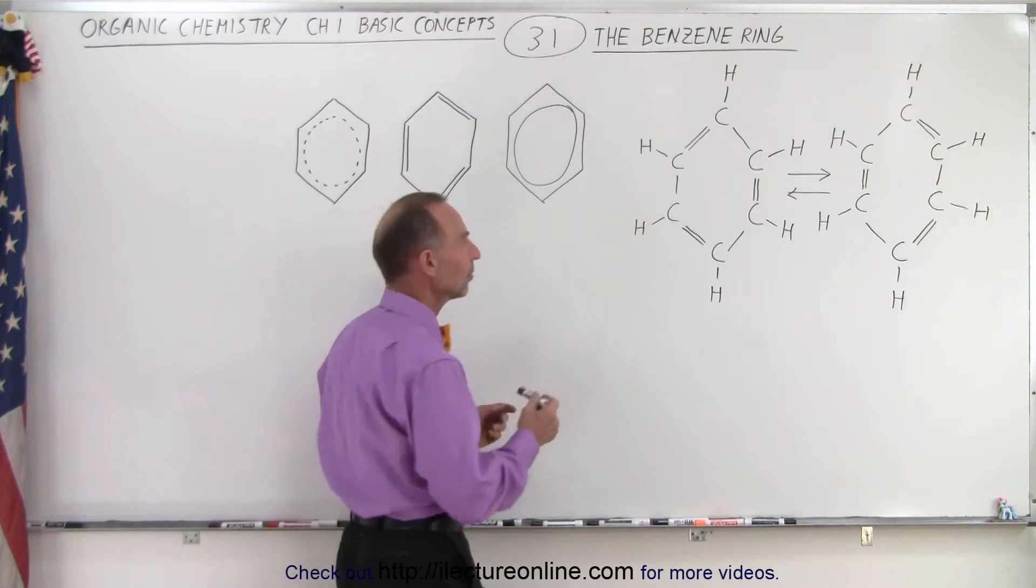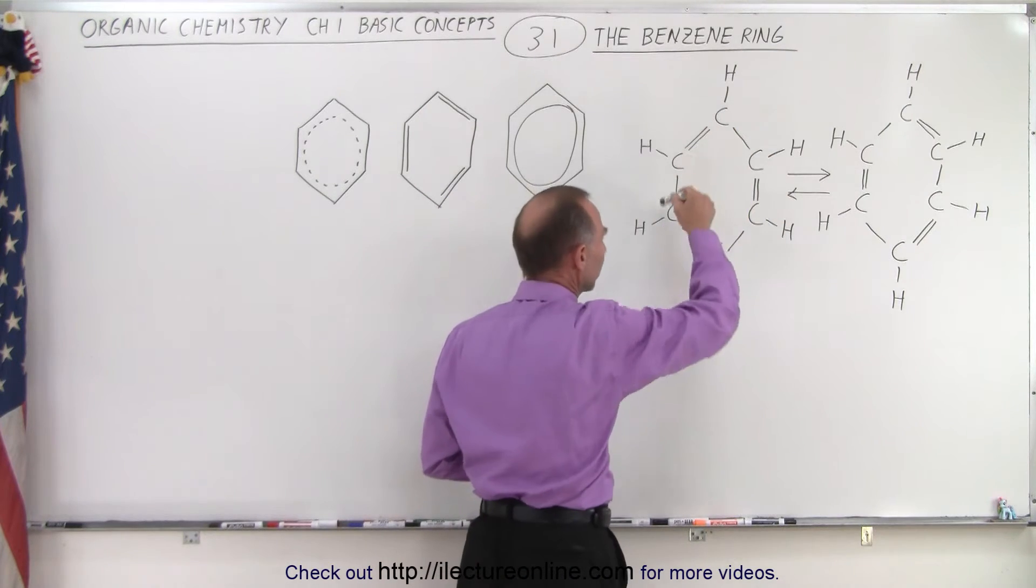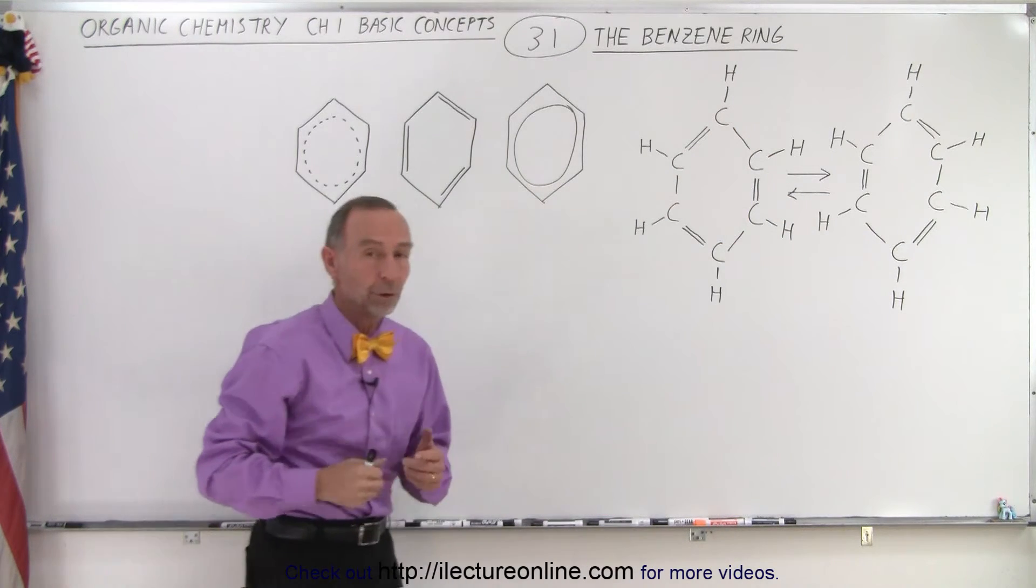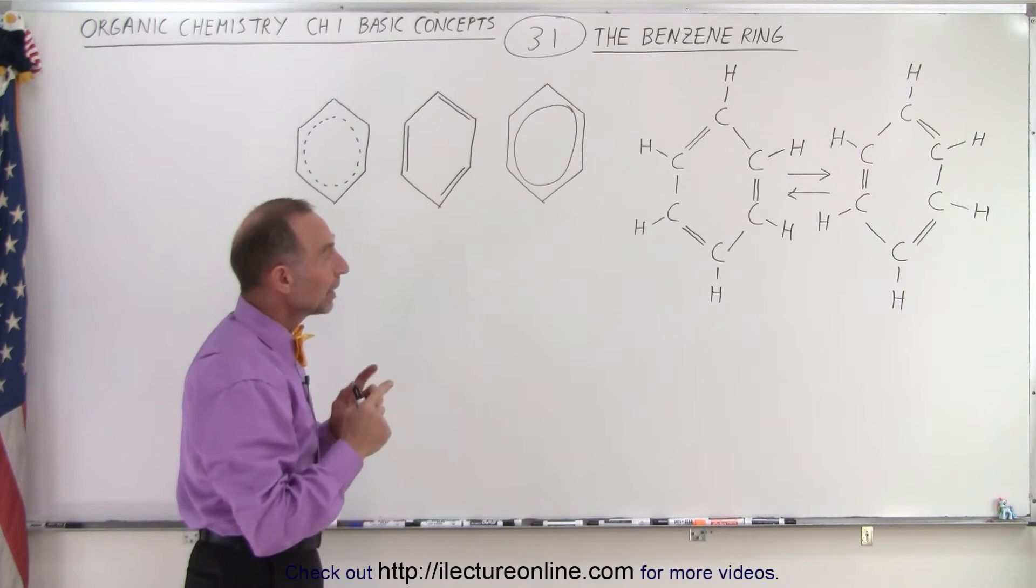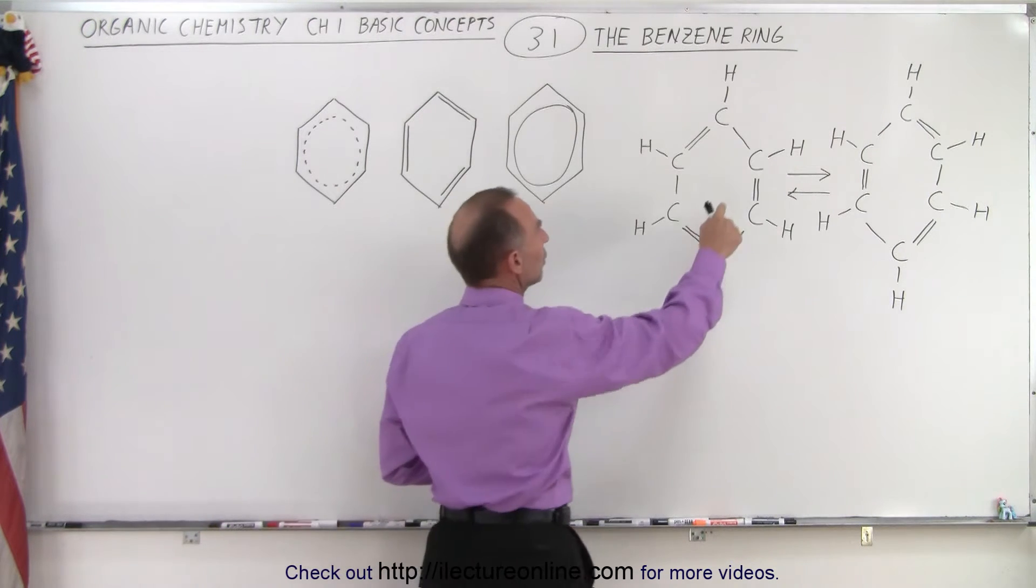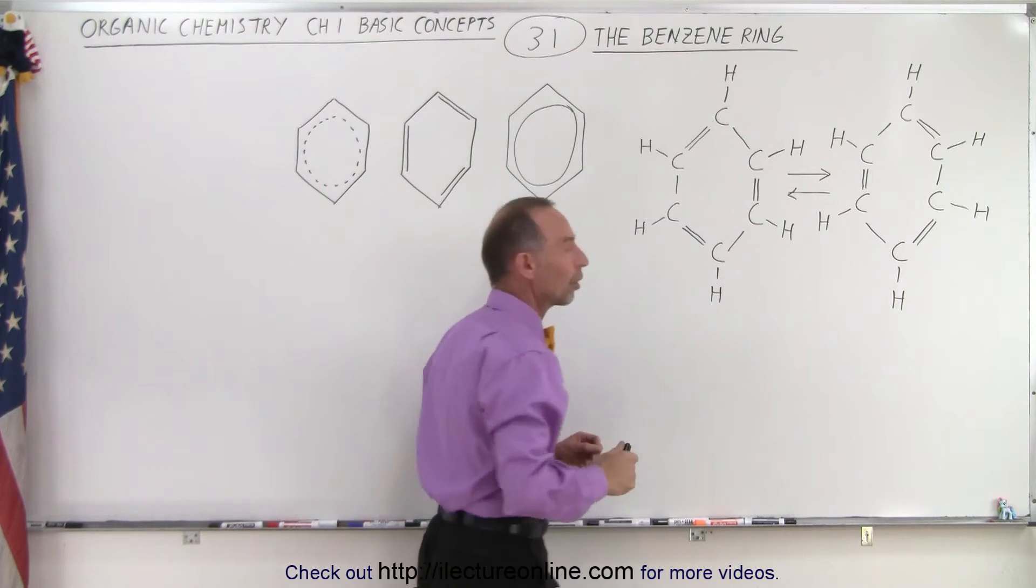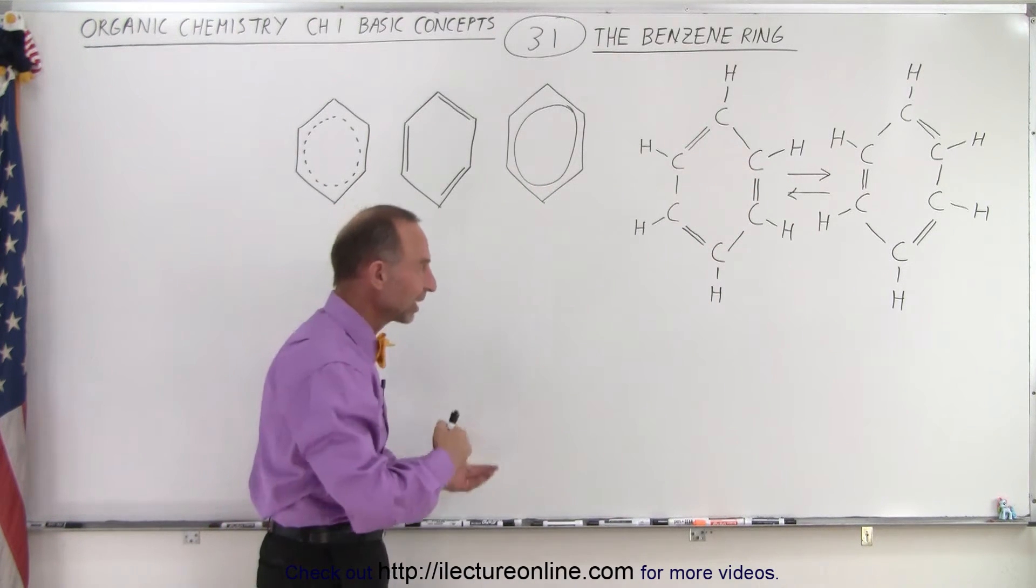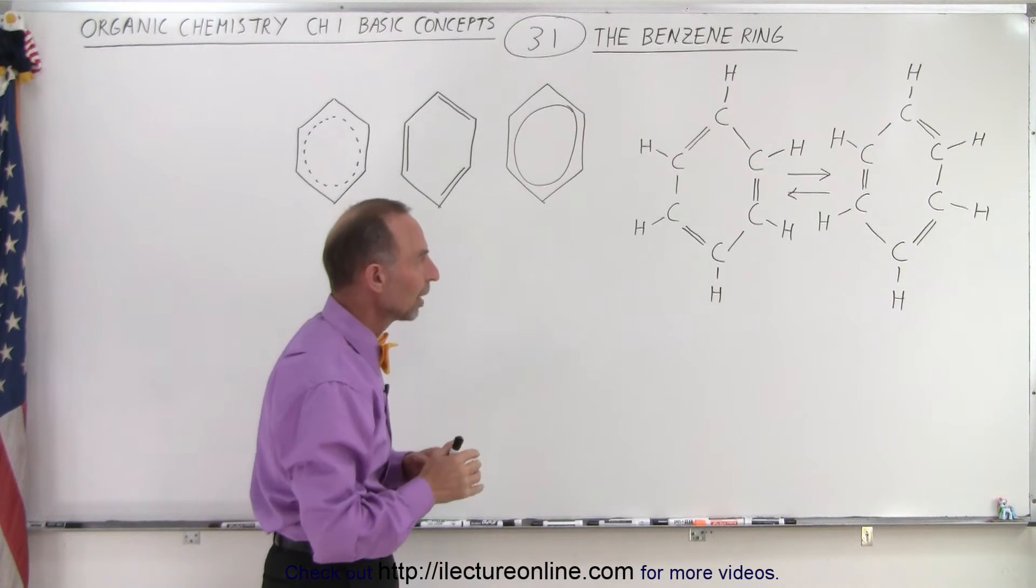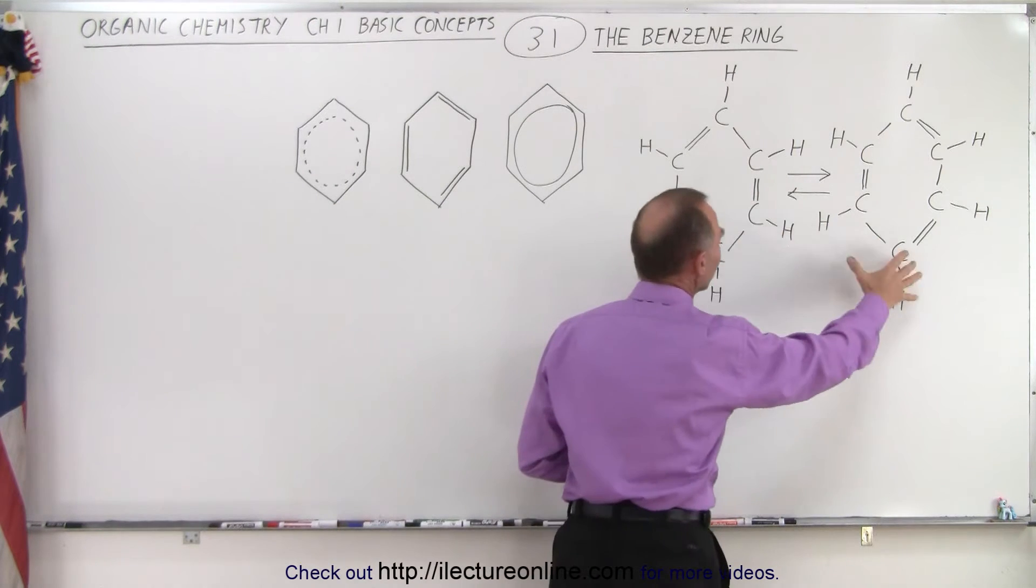What's unique about this is that it has six carbons just like cyclohexane, but in this case it's different because the alternate bonds are double bonds and then the other three are single bonds, so there's a combination of single and double bonds. Notice that there can be two forms of this molecule.